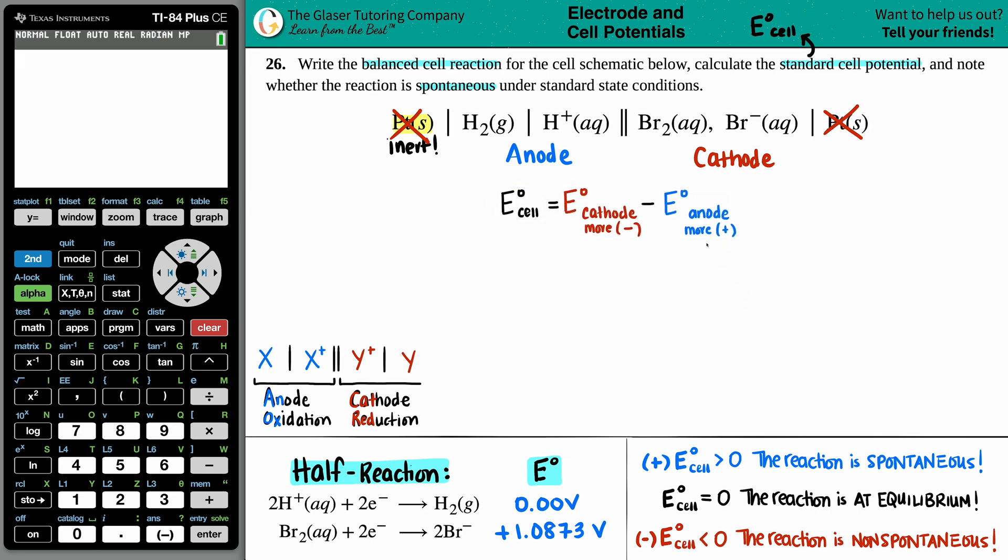Now, the standard cell potential for the whole entire reaction, the formula is this: the E-cell is just equal to the potential of the cathode minus the potential of the anode. If we didn't know which one was the cathode or the anode, it would be easy to talk about it in terms of which one gets more positive, which one gets more negative. However, since we already know which is the cathode and which one is the anode, I don't need that.